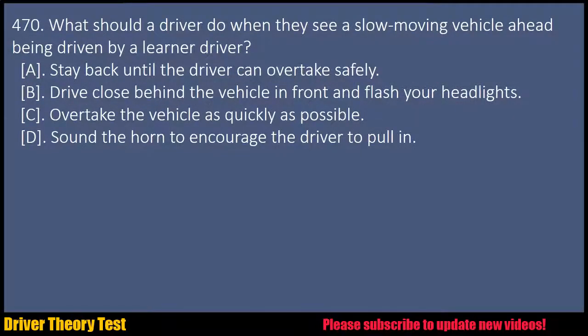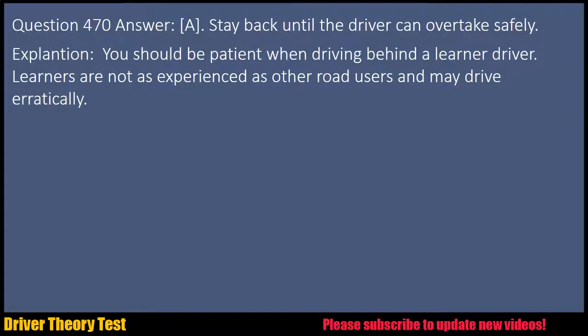Question 470: What should a driver do when they see a slow-moving vehicle ahead being driven by a learner driver? A. Stay back until the driver can overtake safely. B. Drive close behind the vehicle in front and flash your headlights. C. Overtake the vehicle as quickly as possible. D. Sound the horn to encourage the driver to pull in. Answer: A. Stay back until the driver can overtake safely. Explanation: You should be patient when driving behind a learner driver. Learners are not as experienced as other road users and may drive erratically.